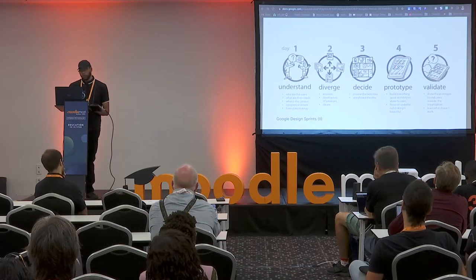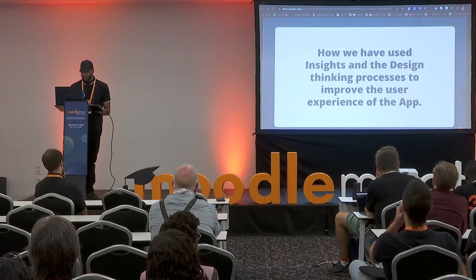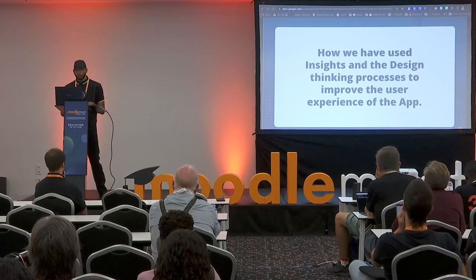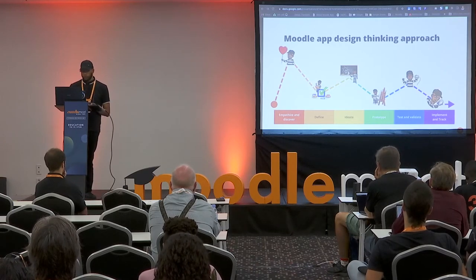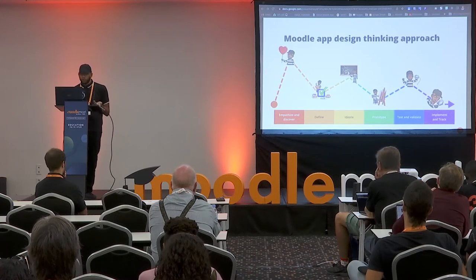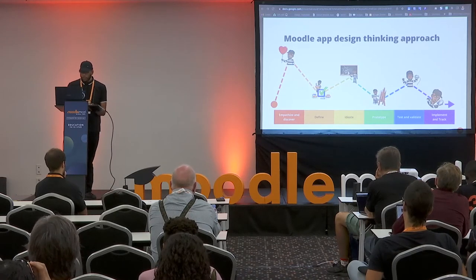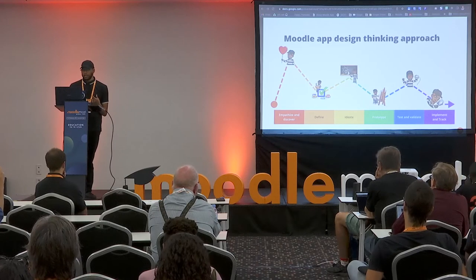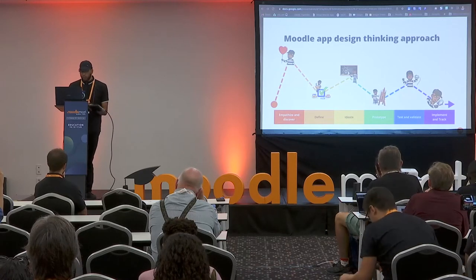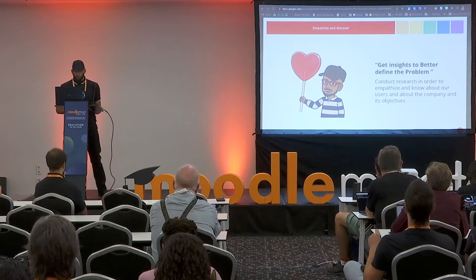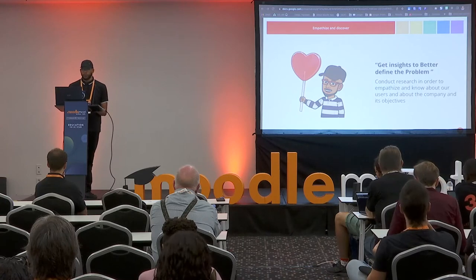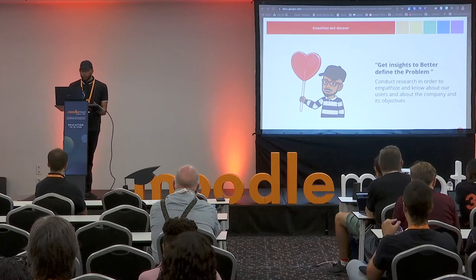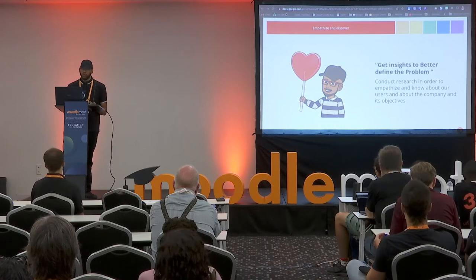Let's jump to the heart of the matter: how we used insights and the design thinking process to improve the user experience in the app. In general, it's a process that consists of collecting and gathering information and then reducing our possibilities and prioritizing. The Empathize and Discover phase consists of researching and gathering necessary information and asking the whys, in order to understand the business goals and empathize with users and understand their needs.